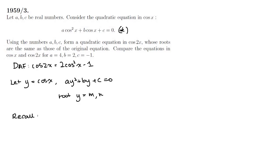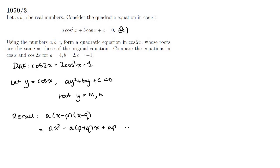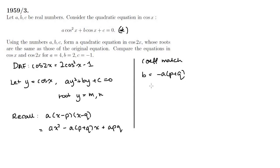Let's recall the form of the quadratic equation in terms of its roots: A(x minus p)(x minus q), where p and q are the roots of the polynomial. This expands to Ax squared minus A(p plus q)x plus Apq. Matching coefficients with Ay squared plus By plus C, we get B equals minus A(p plus q) and C equals Apq, where p and q correspond to roots M and N.